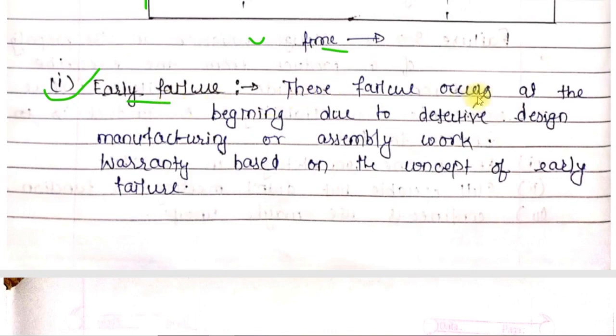Early failure: This failure occurs at the beginning due to defective design, manufacturing, or assembly work. This failure happens if there's a defect in your design, if you made mistakes in assembly, or errors in the manufacturing process. If you made any mistakes in these areas, your product may have early failure. The warranty we see on products covers this phase - the early failure - because this is the company's fault, the defective design fault.